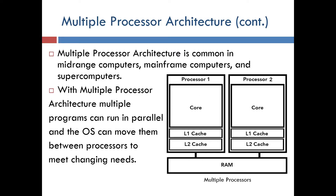Multiple processor architecture is common in mid-range computers, mainframe computers, and supercomputers. With multiple processor architecture, multiple programs can run in parallel and the OS can move them between processors to meet the changing needs.